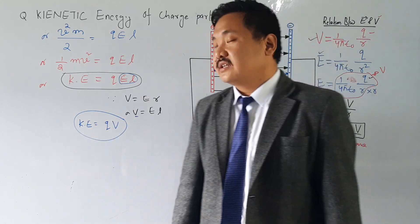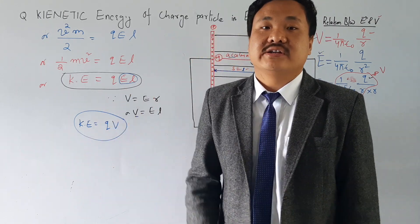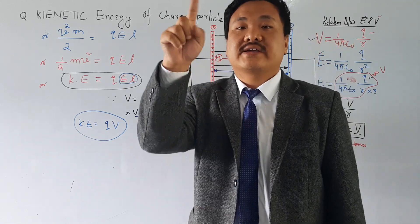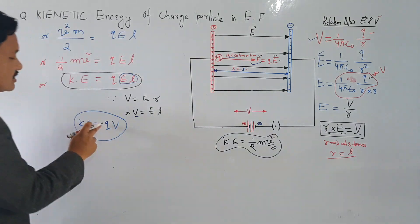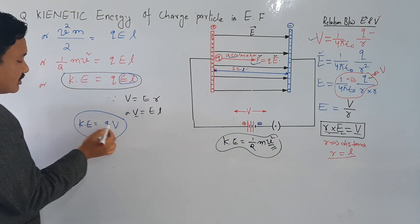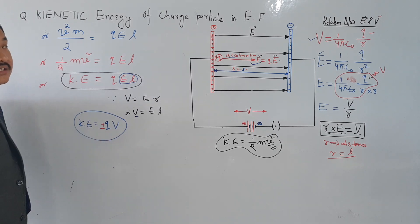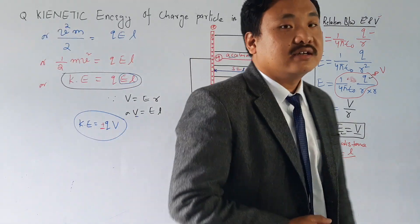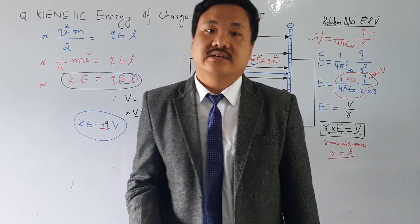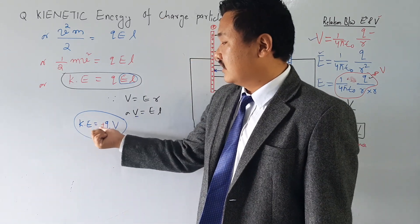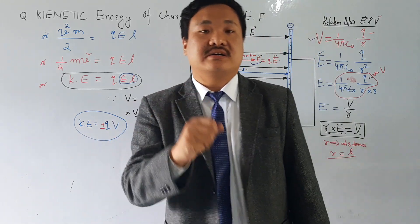The SI unit of kinetic energy — or any energy — is the Joule (J). If it was a positive charge then the kinetic energy is positive; if it was a negative charge it is negative. Whenever you find energy, you have to put the sign of the charge — whether potential energy or kinetic energy. So the kinetic energy of a charged particle in a uniform electric field is equal to plus or minus QV.